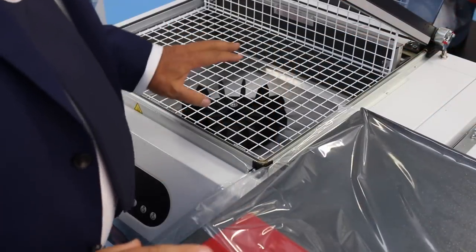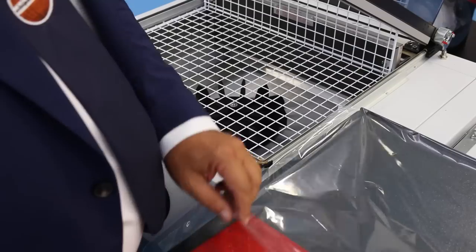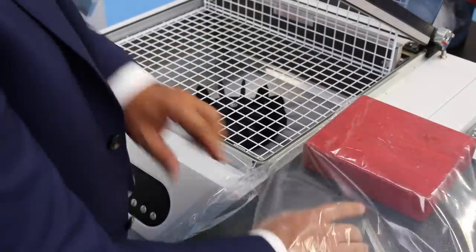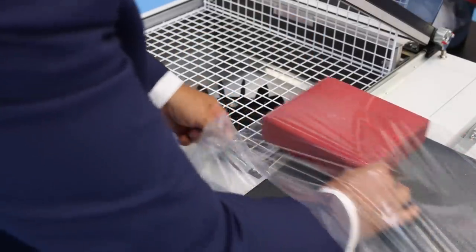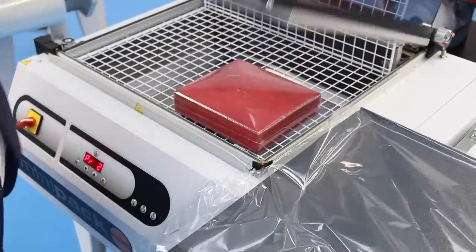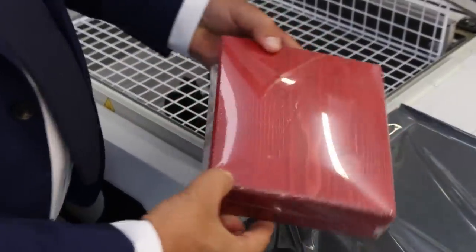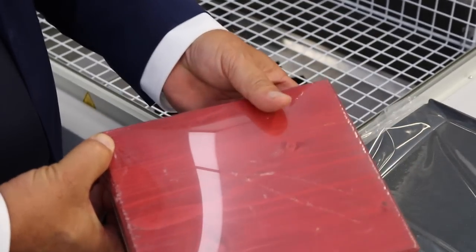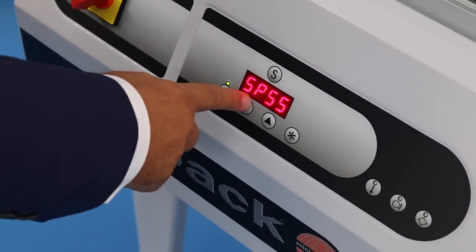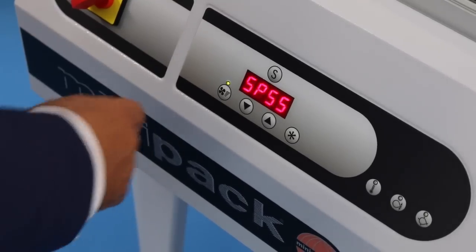Now let's go on the shrink. The power of this Replay 55 is a strong power. We have two heating elements here. So as you can see, you can put the product, close it, in one half second you have a great shrinking product. We have regulated the speed of the fan to give more power or less power.